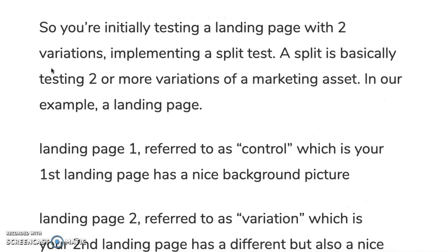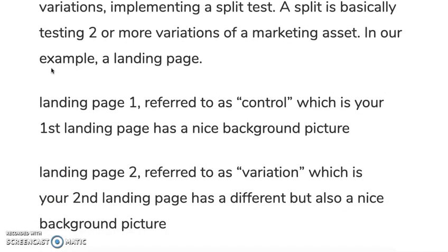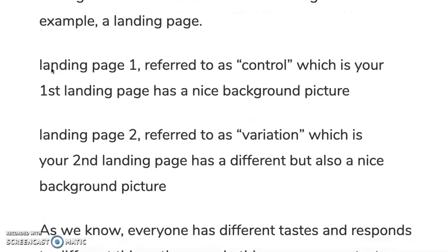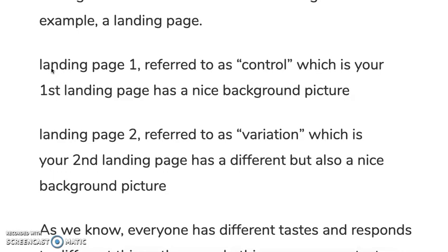Landing page one, referred to as the control, which is the main one, the first landing page, and it has a nice background picture. Landing page two, referred to as the variation, which is the second landing page, which has a different but also nice background picture. So you have two landing pages with two different background pictures, both nice.